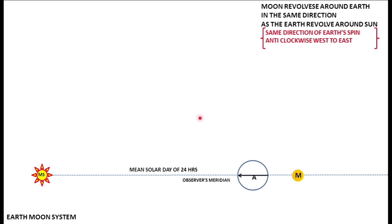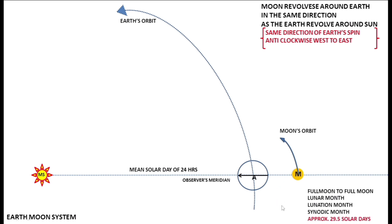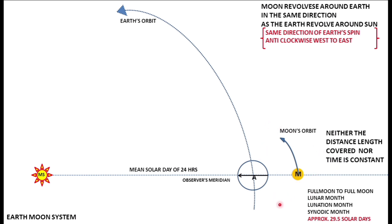The Moon is an Earth satellite revolving around the Earth in the same direction the Earth revolves around the Sun — anti-clockwise, from west to east. A complete orbit brings the Moon back to the full moon position, taking approximately 29 days. This is called the lunar month or synodic month, though there is a variation of about 13–14 hours, which is why I use the word 'approximately.'